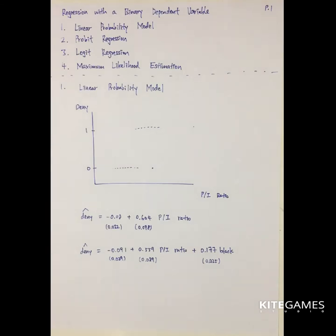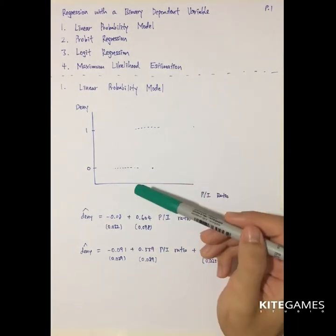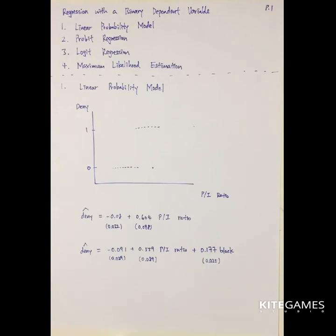First is the linear probability model. In the past, we had a chapter talking about how to build a regression model with binary independent variables, where x can be dummy variables equal to zero or one. In this case, for the dependent variable y, it may result in only two numbers — for example, a student's decision whether to drop out of school or continue studying, or whether a person can successfully apply for a mortgage. There are only two options, one and zero, and we can quantify qualitative variables this way.